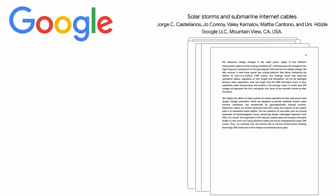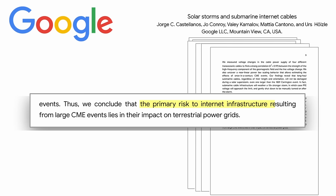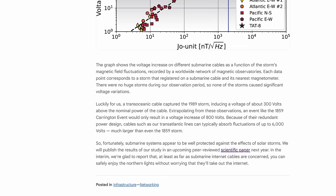To be fair, the study does make a casual remark at the end of their paper that the primary risk to internet infrastructure resulting from large CME events lies in their impact on terrestrial power grids. But this detail seems to be lost in Google's own presentation of this study. It remarks, you can safely enjoy the northern lights without worrying that they'll take out the internet. I'm sure the designers of the Titanic said a similar thing about icebergs.